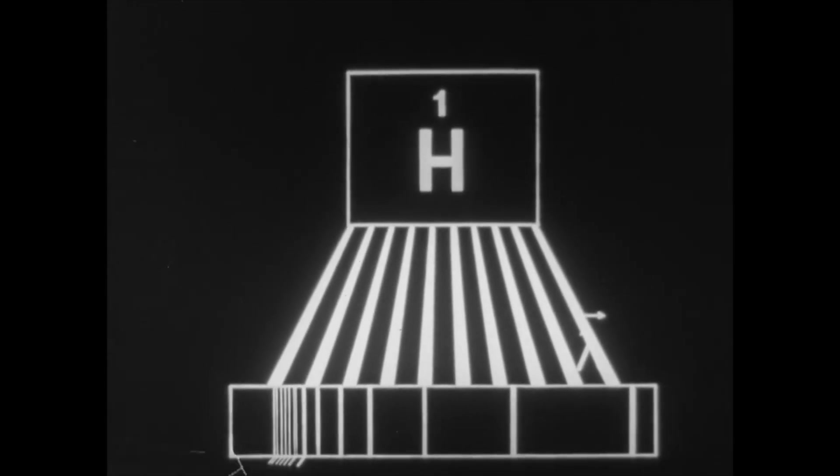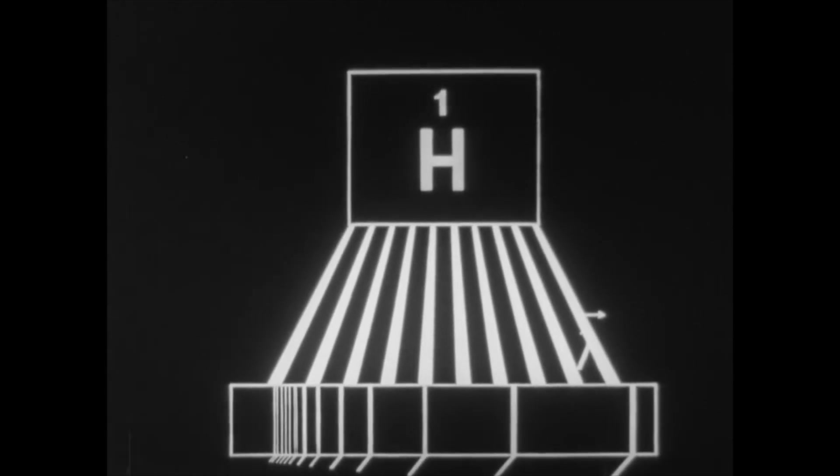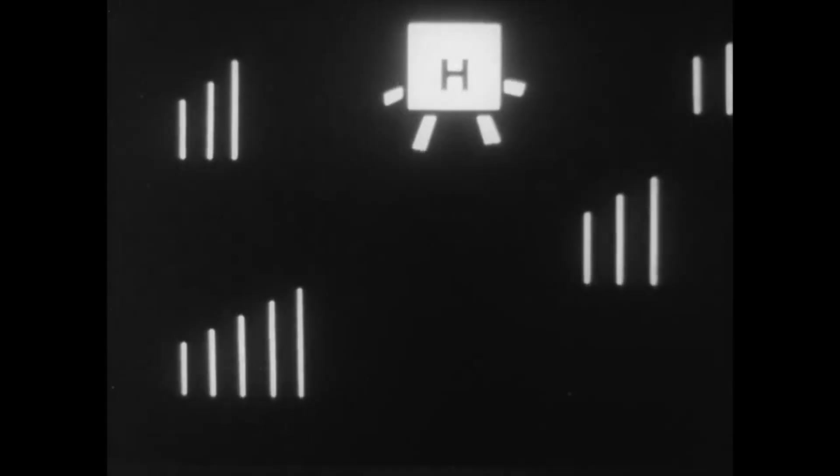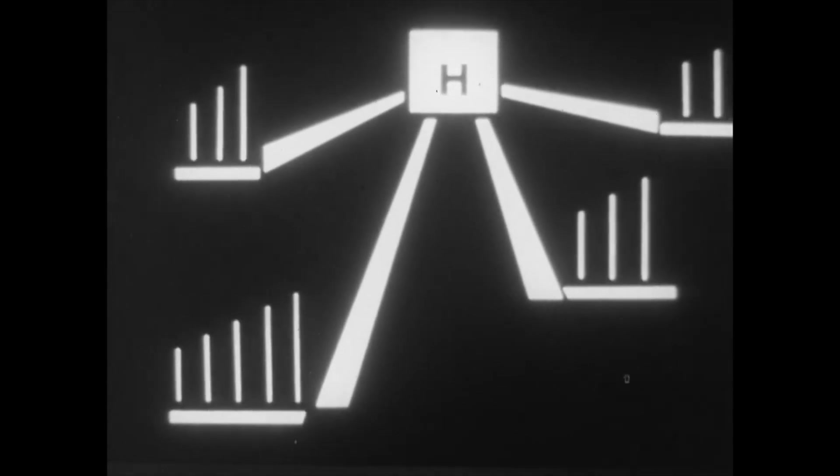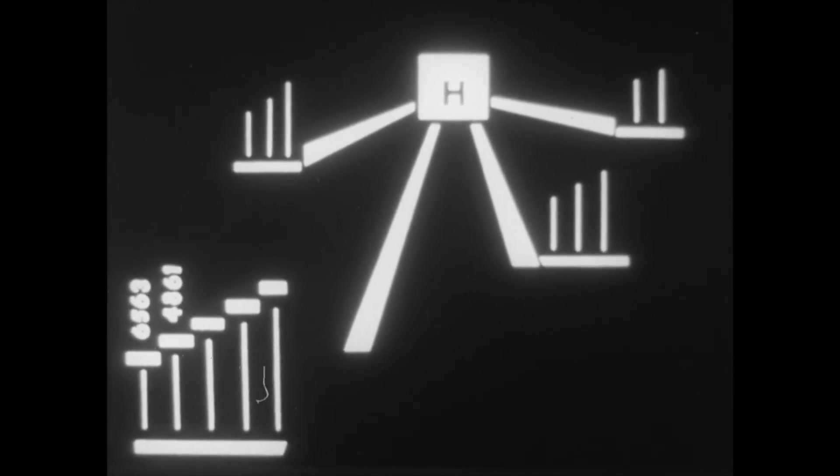The simplest spectrum is that of hydrogen, consisting of several series. The series of lines visible and adjacent to it in the ultraviolet region of the spectrum forms the most famous series, the Balmer series.